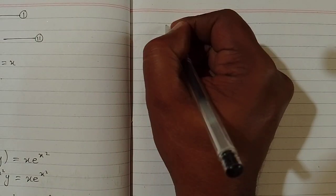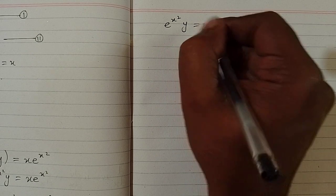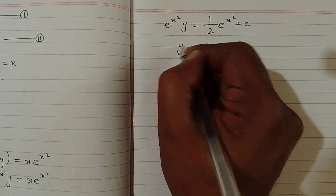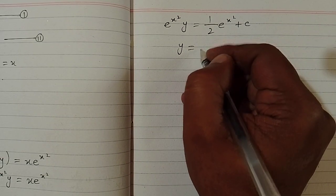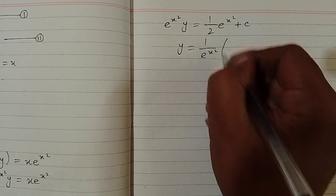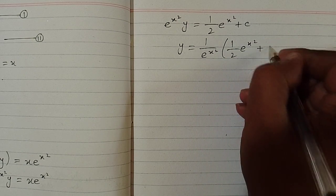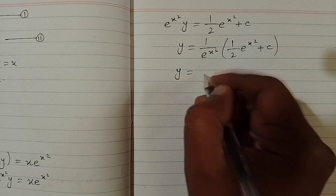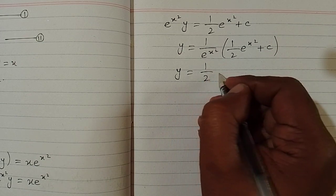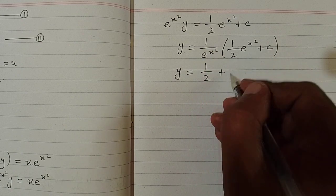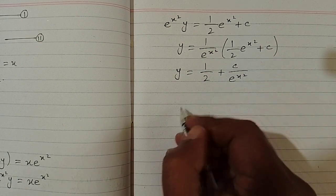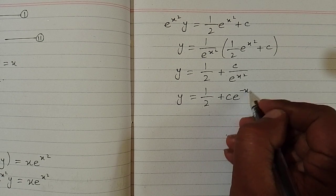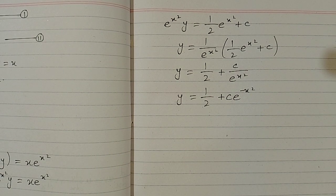So we have e^(x²)·y = (1/2)·e^(x²) + c. Now we divide both sides by e^(x²): y = (1/e^(x²))·[(1/2)·e^(x²) + c] = 1/2 + c/e^(x²). The final solution is y = 1/2 + c·e^(-x²), and this is the required solution of the given differential equation.